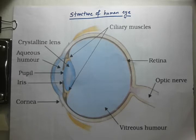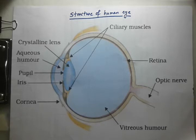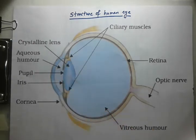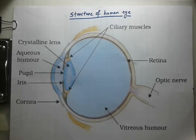The next important part is the eye lens, also called the crystalline lens. It is a double convex lens situated behind the iris, composed of jelly-like material. The lens is held in position by suspensory ligaments connected to the ciliary muscles. By contracting or relaxing the ciliary muscles, the shape or curvature of the eye lens changes, and hence its focal length changes.